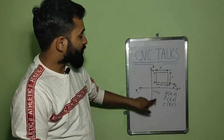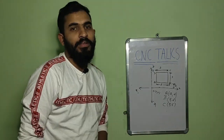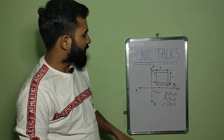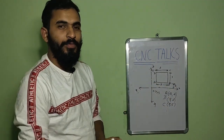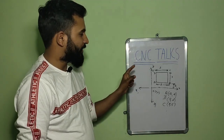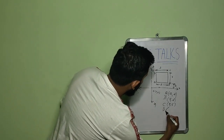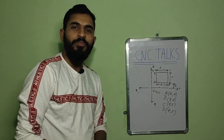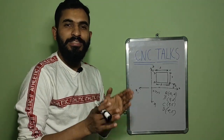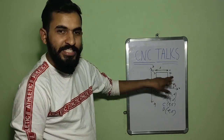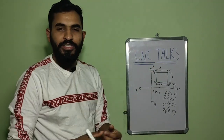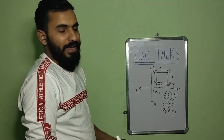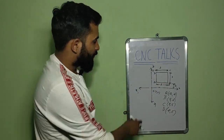Similarly, let's find the coordinates of point D from this origin. The distance of point D is 2 mm on x axis and 3 plus 2, which is 5 mm, on y axis. So the coordinates of point D will become 2 and 5. That was a basic example of the absolute coordinate system, where we found the coordinates of each point considering O as the origin. In an absolute coordinate system, there is only one origin and all the dimensions will be taken from this origin.